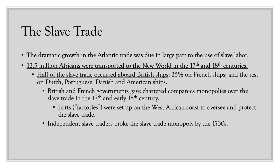British and French governments gave chartered companies monopolies over the slave trade in the 17th and early 18th century. Forts — also called factories — were set up on the West African coast to oversee and protect the slave trade. Despite best efforts to maintain a monopoly, independent slave traders ultimately broke that monopoly by the 1730s. Most slaves were actually captured by rival African tribes who traded them for European goods such as cloth, alcohol, and weapons.